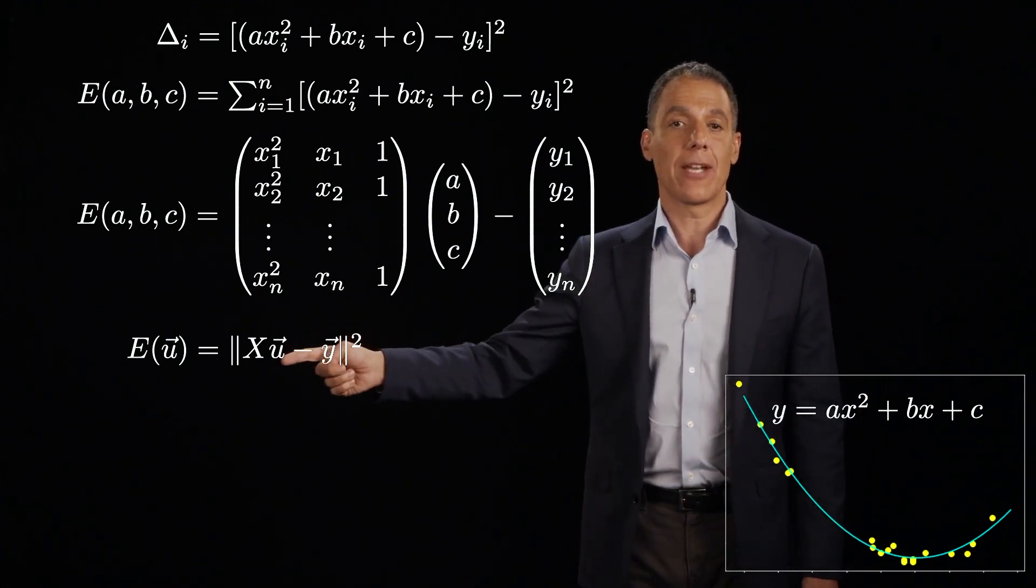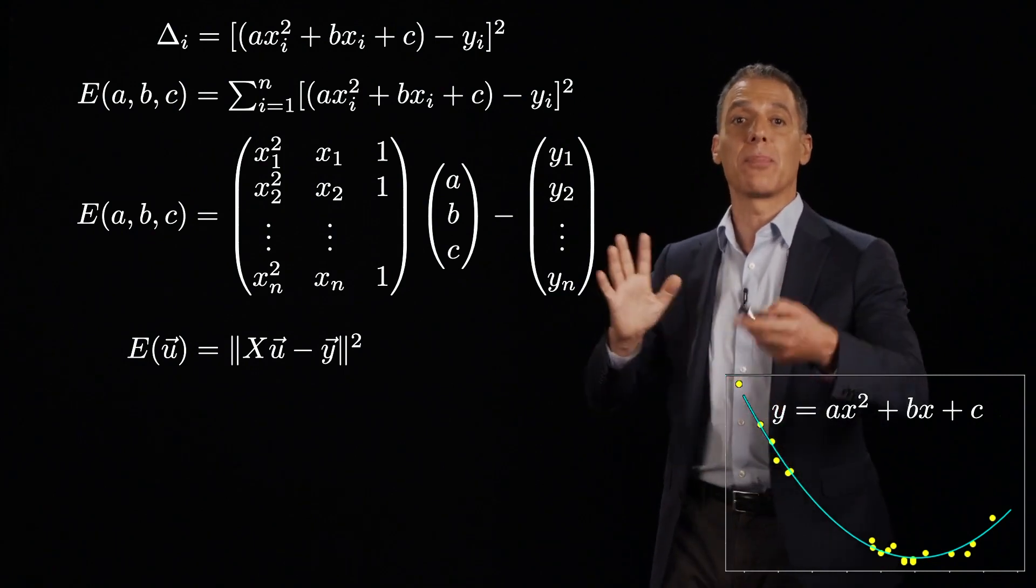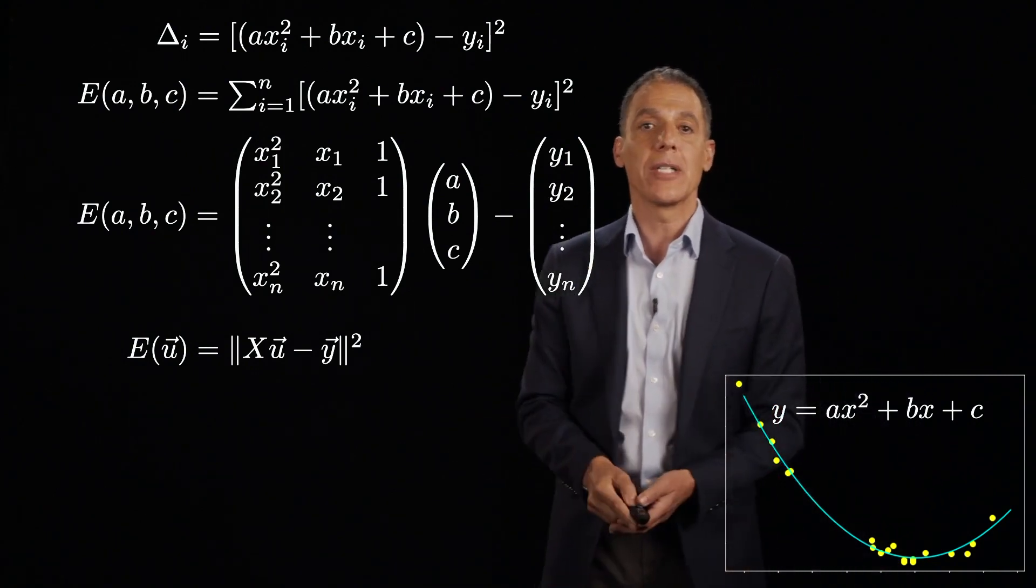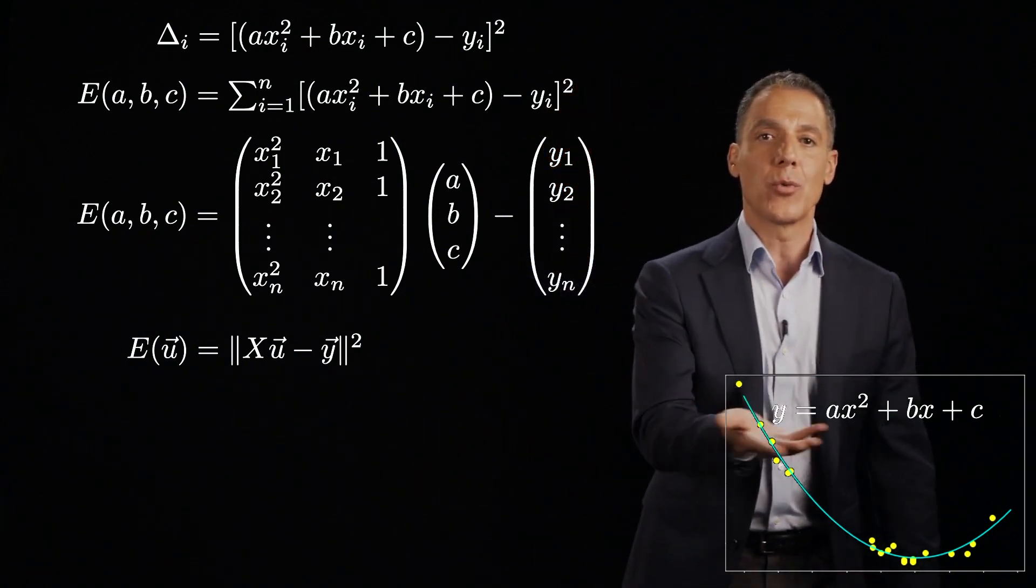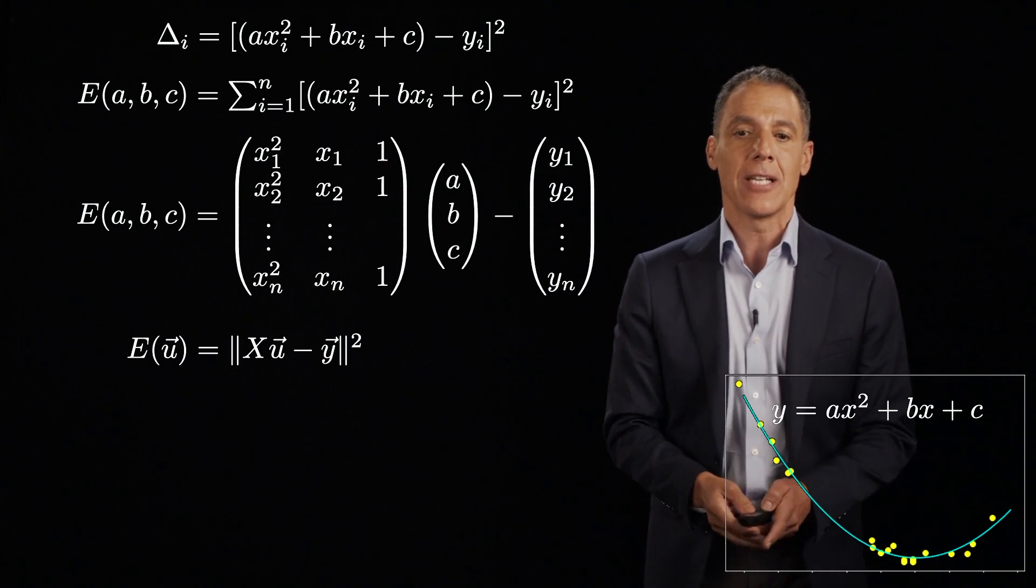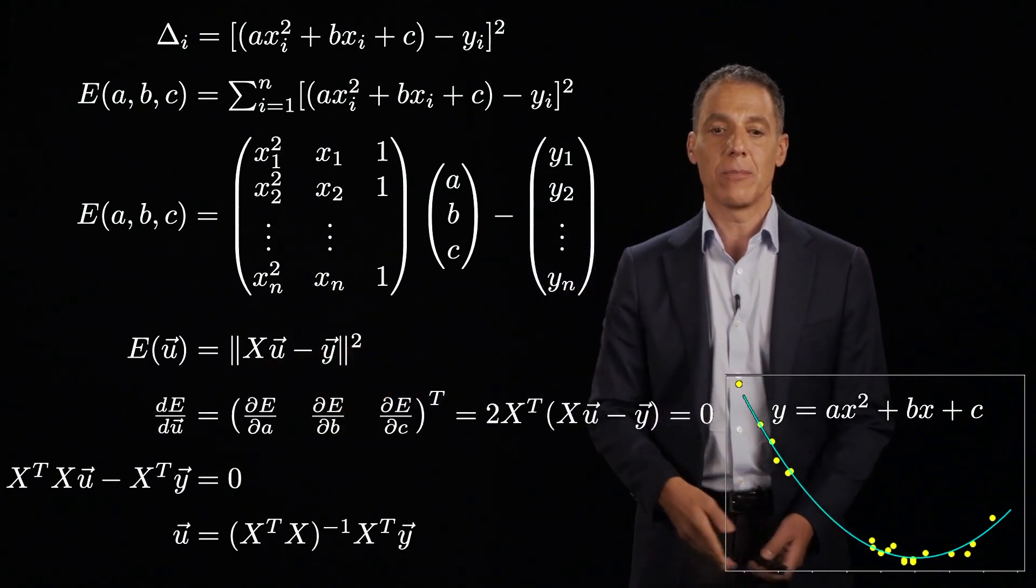And go back to the previous segment, and if you don't remember it, and look at this, it looks exactly the same. E of U is equal to vector norm squared of X U minus Y. That's exactly what we had when we did slope and intercept. What's the difference? The only difference here is that X is now N by 3, and the unknown is 3 by 1. But from the point of view of computing the derivatives linear algebraically, nothing is different.